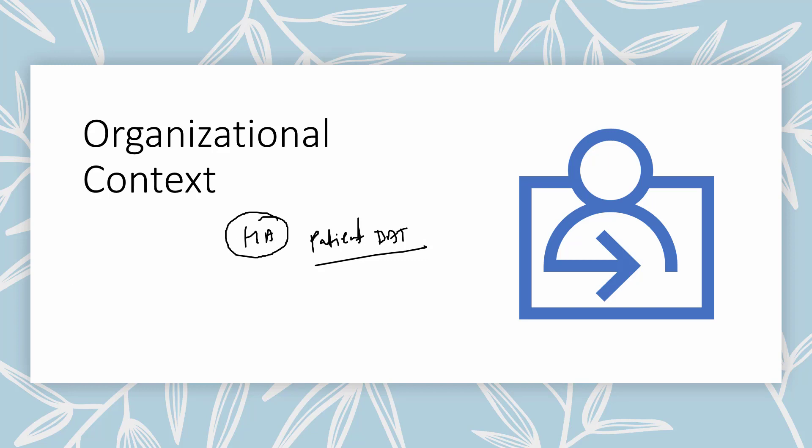It's very important for us to understand the organization's context to have better visibility. Without understanding the organization context, we cannot implement cybersecurity effectively. For e-commerce, the priority is availability. For the banking sector, the priority is integrity and confidentiality. According to that, we need to prioritize the solutions.